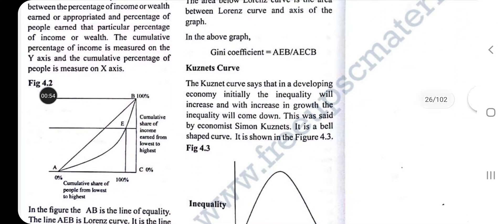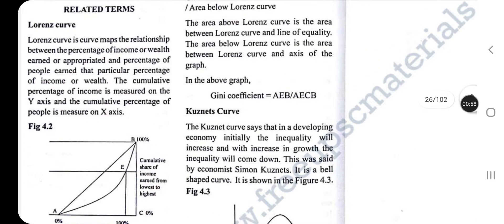The Lorenz curve is a curve that maps the relationship between the percentage of income or wealth earned and the percentage of people who earned that particular percentage of income.